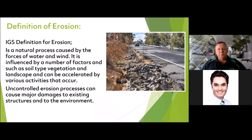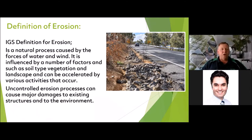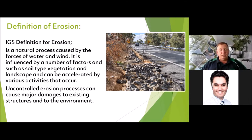We're talking about how the erosion mat helps with our environment. The IGS definition for erosion is a natural process caused by the forces of water and wind, influenced by factors such as soil, vegetation, landscape, and can be accelerated by storms, drought or other environmental factors. Uncontrolled erosion can cause major damage to existing structures and the environment — as you can see from the picture of a drain after a storm.